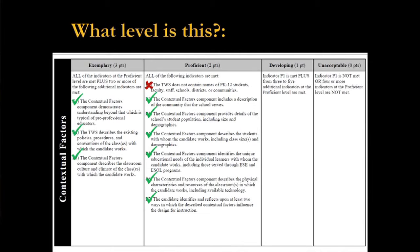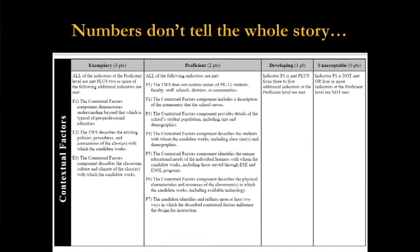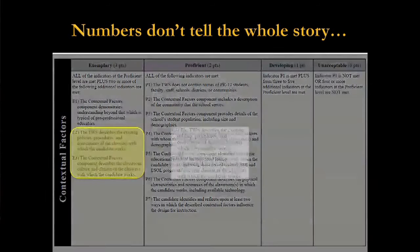I use this as an example on purpose because indicator P1 for contextual factors is one of what we call a hypercritical indicator. P1 says that I keep it anonymous — I didn't use anybody's name. So if you use somebody's name, that's not developing, that's unacceptable. There are five different hypercritical indicators. Pay attention to them on the rubric — I'll try to draw your attention to them as we go through the seminar.